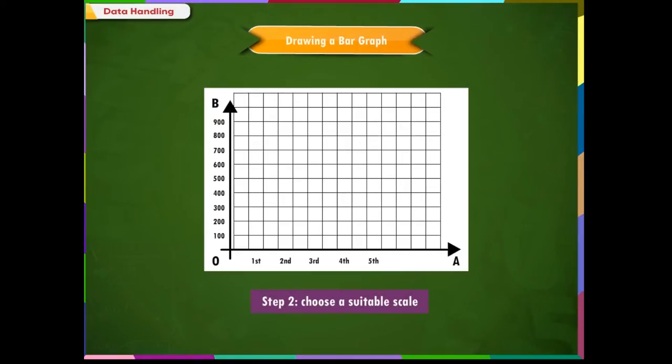We have to mark these numbers on the vertical axis. We can mark the vertical axis with numbers like 100, 200, 300, 400, 500, 600, 700, 800 and 900.